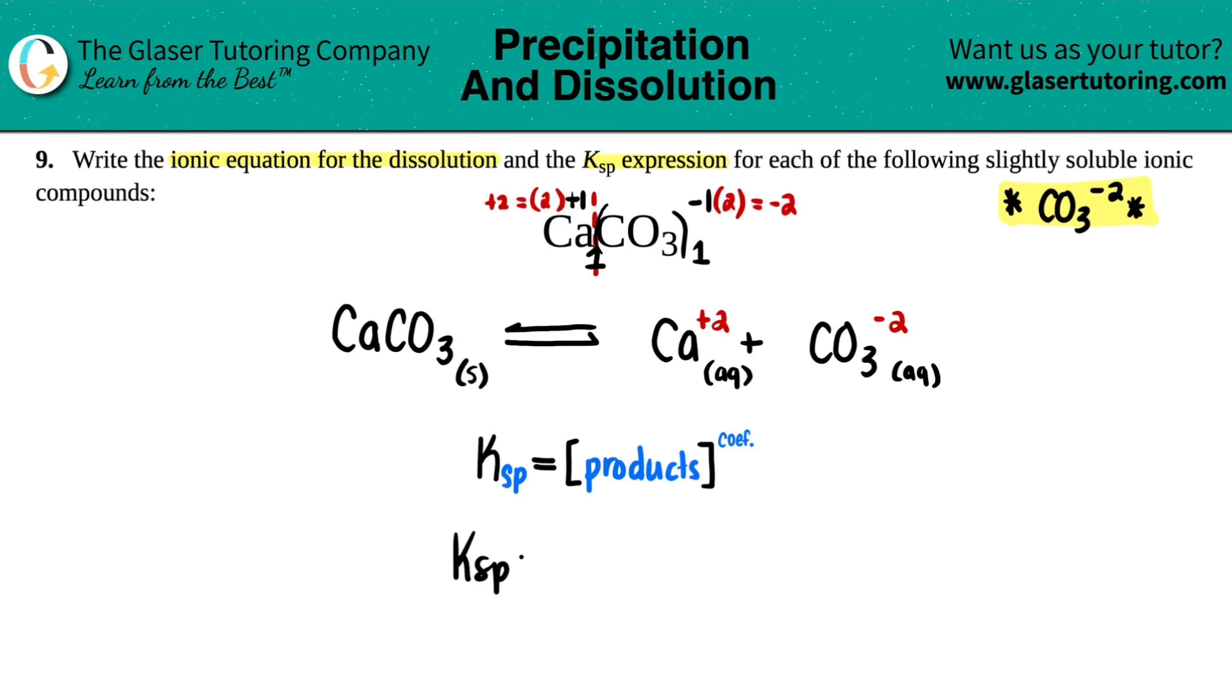So KSP equals concentration of Ca2+ times the concentration of CO3 2-. And we have to raise both of them to their coefficients. You just got to make sure. But in this case, it was a 1 and 1. There was no coefficients. So if we raise both of them to the first, that's just the same thing. So you don't have to write that for this one. And this is your final answer.